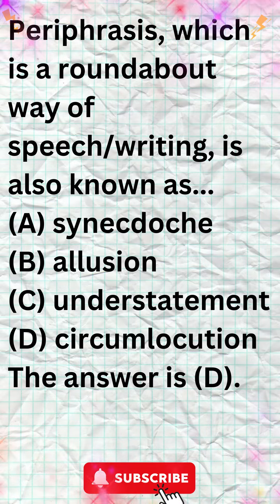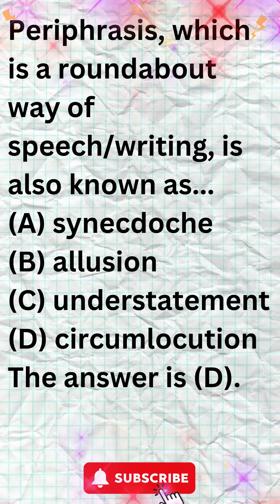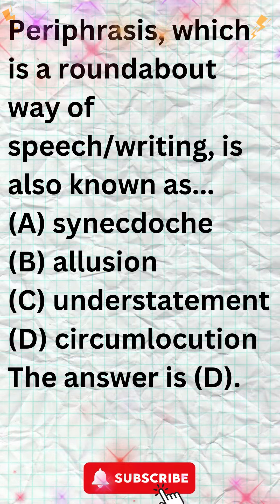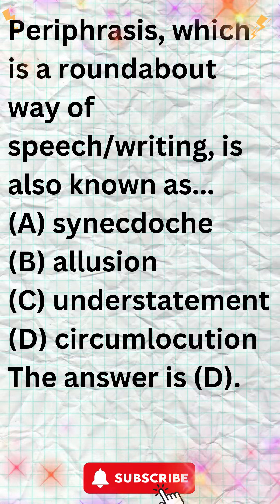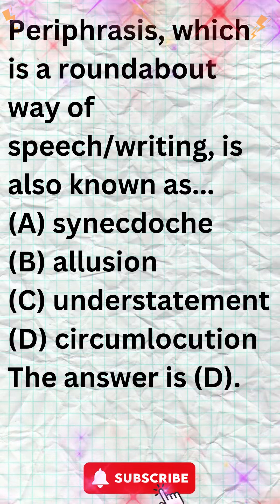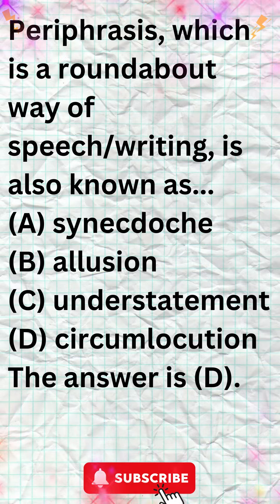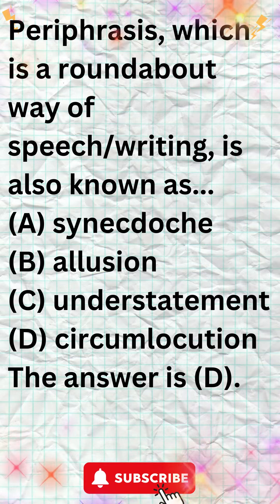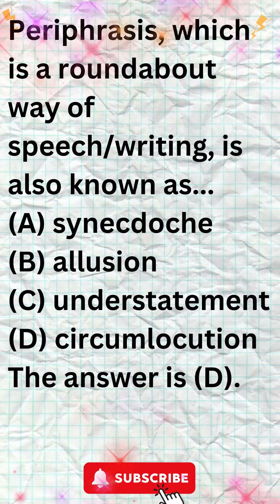Circumlocution is a roundabout way of speaking or writing. It involves using more words than necessary to say something. For example, instead of saying 'I'm hungry,' someone might say 'I could do with some sustenance.'